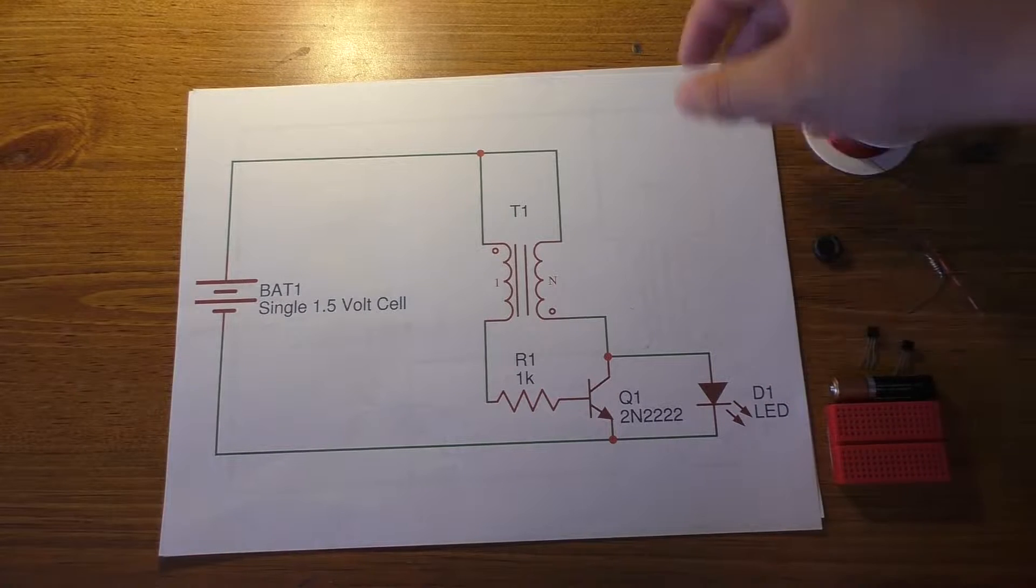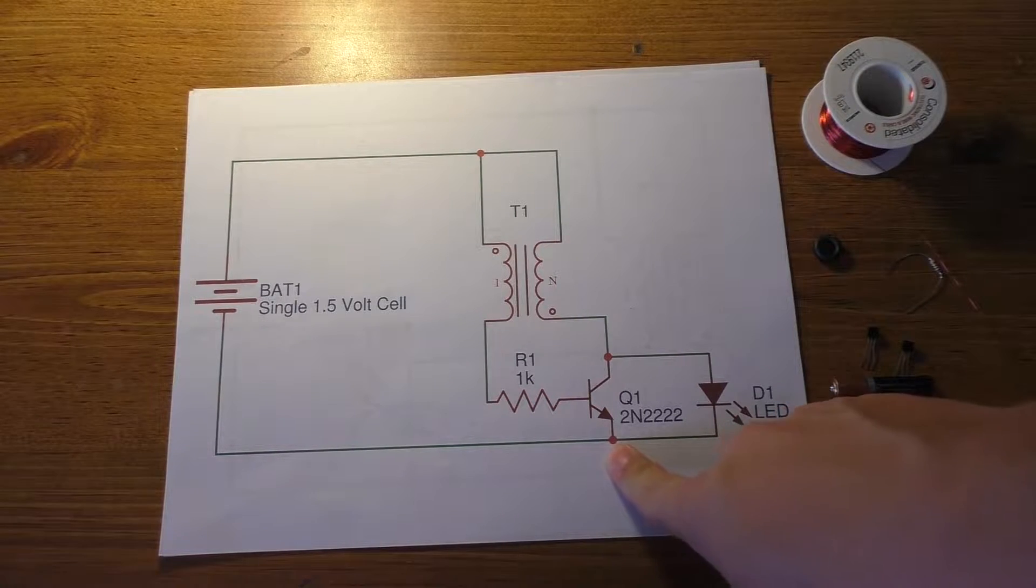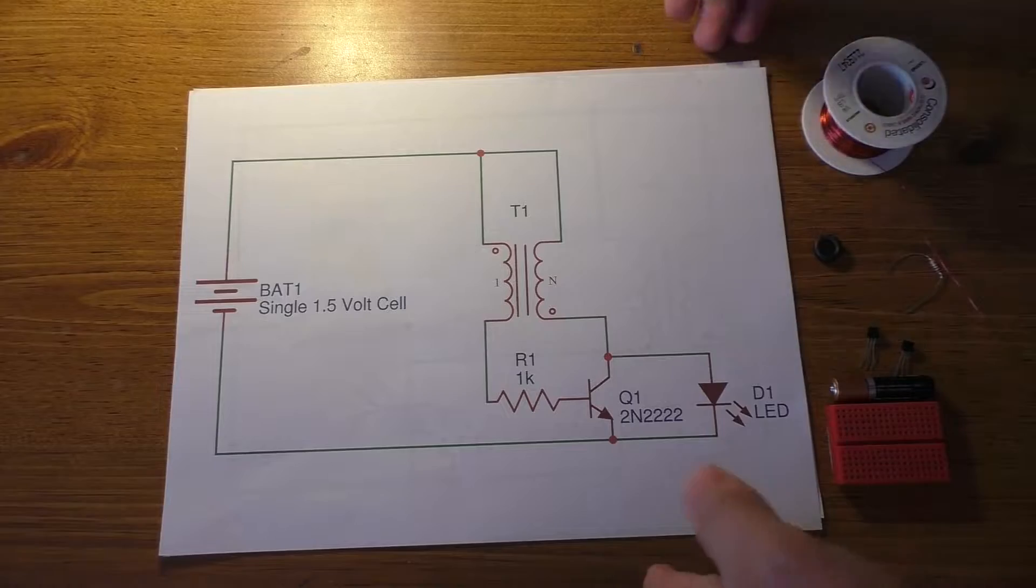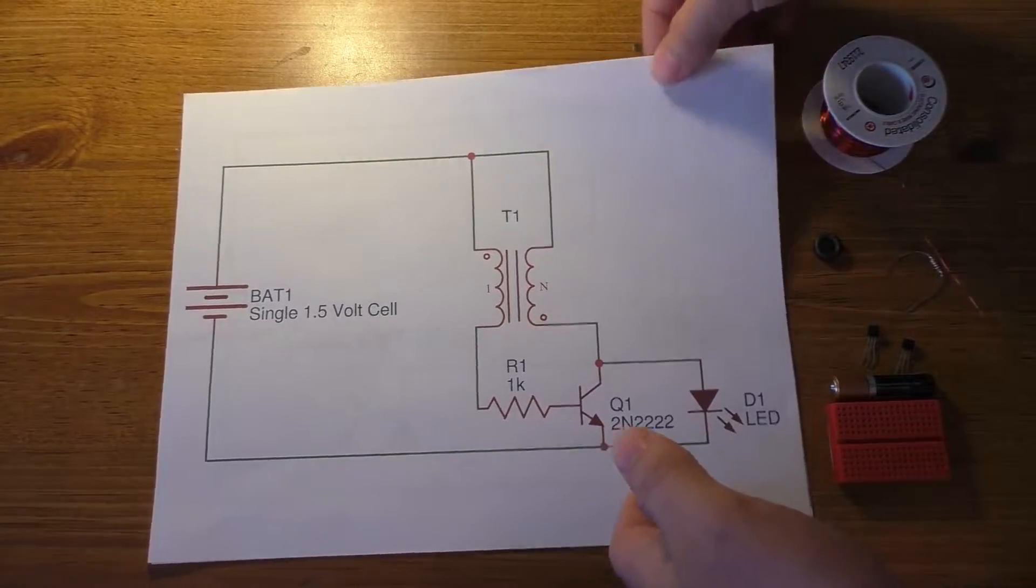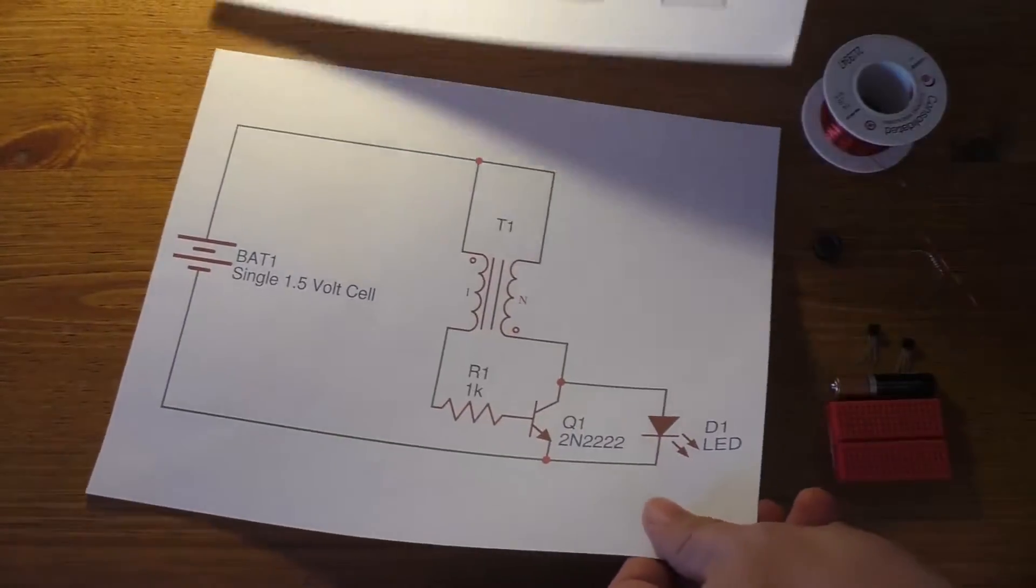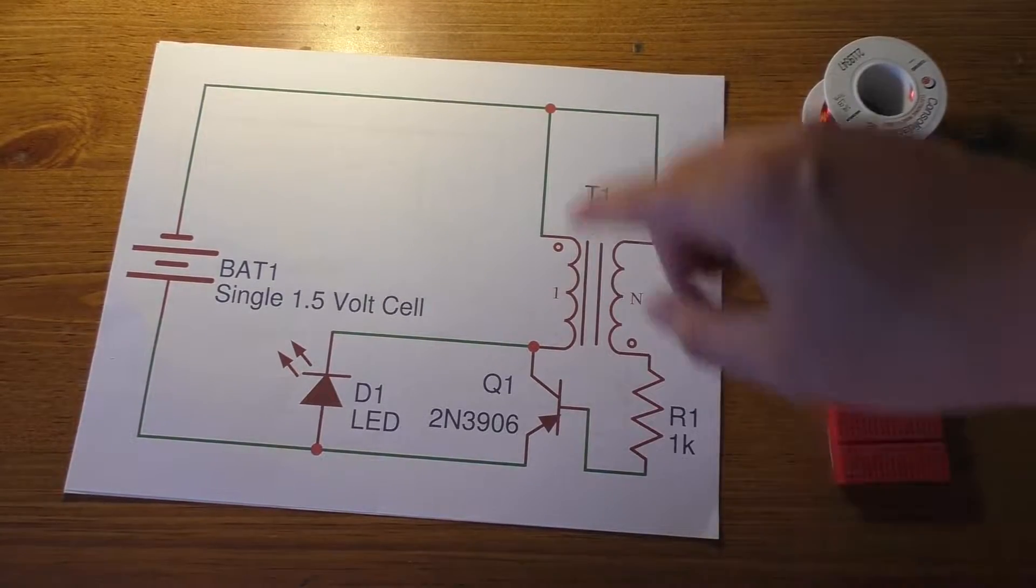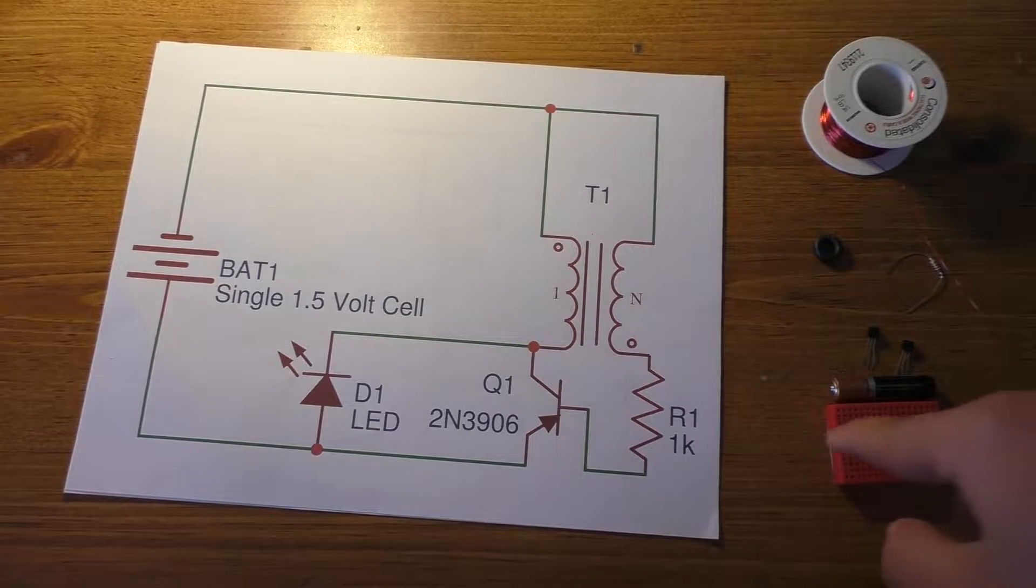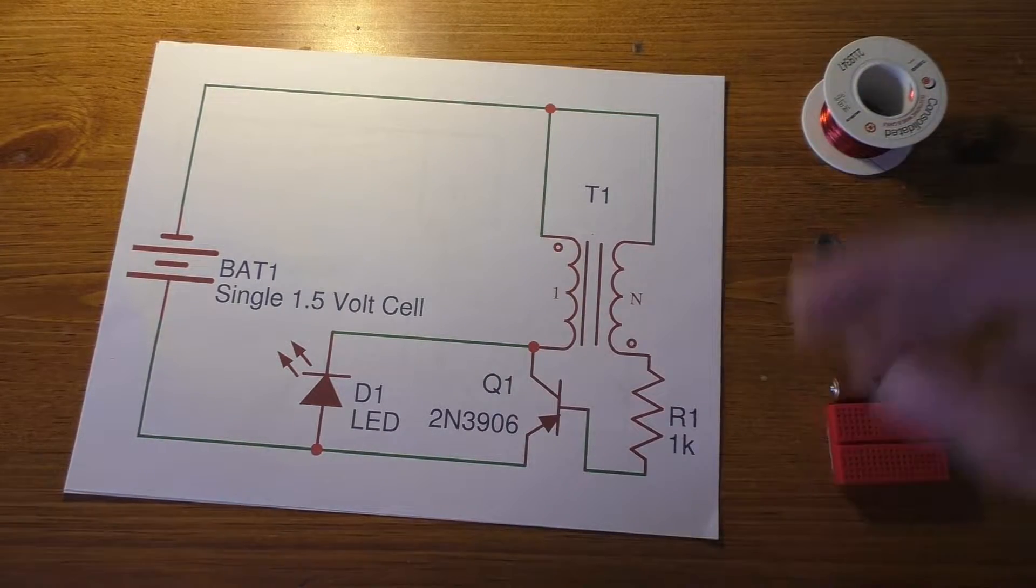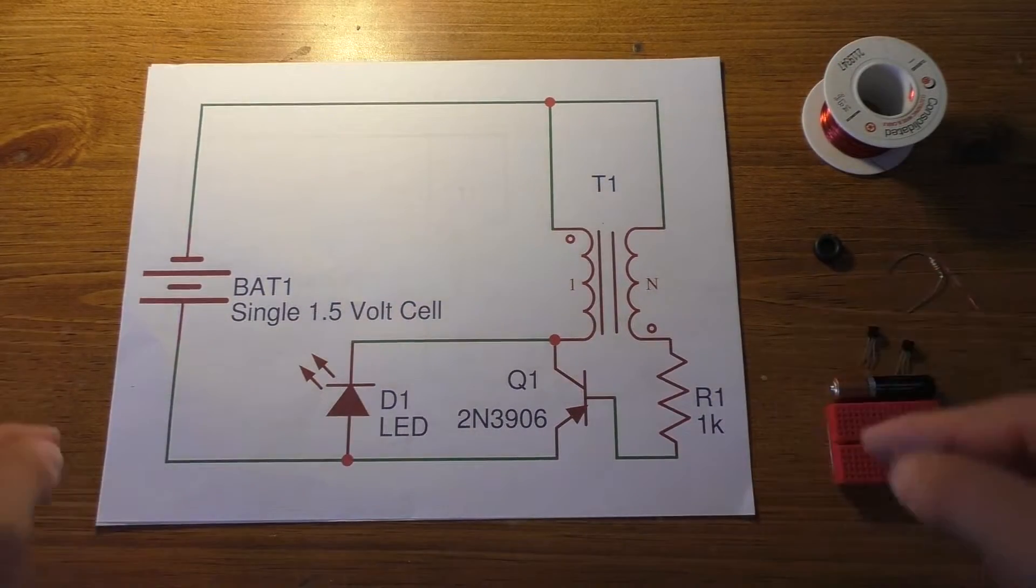So this is what a normal one would look like with an NPN transistor. I also have a schematic for if you're using a PNP transistor. So I have a 2N3906 here and it's actually really easy. I'll show you how you can switch this over, but that's what the schematic looks like if you're curious.